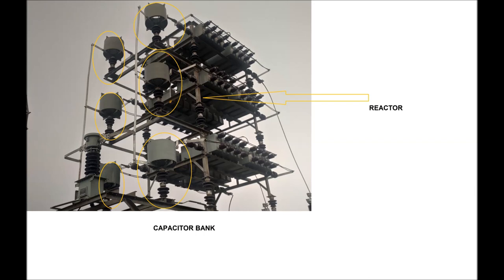In this figure, a capacitor bank operating at 20 MVAR has been shown. There are six reactors. The 20 MVAR capacitor bank is of double star connection for three phase. In each star, in each phase, there exists a reactor in series with the capacitor series-parallel group combination. Therefore six reactors are used.